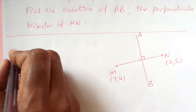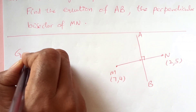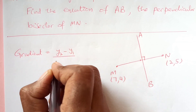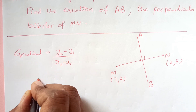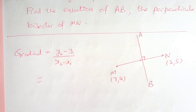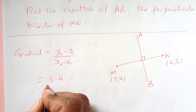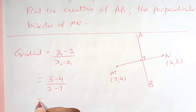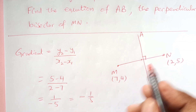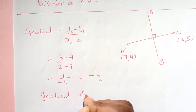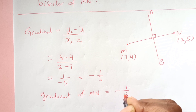To find the equation of line MN, we need the gradient. We use the formula: gradient = (y2 - y1) / (x2 - x1), which is the change in y over change in x. So gradient of MN = (5 - 4) / (2 - 7) = 1 / -5 = negative 1/5.